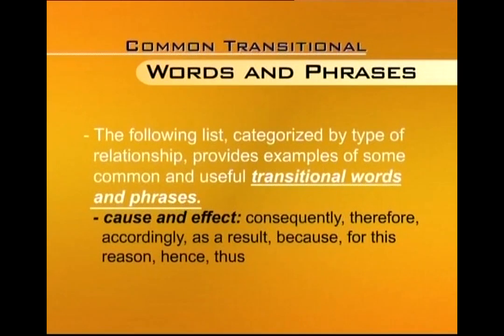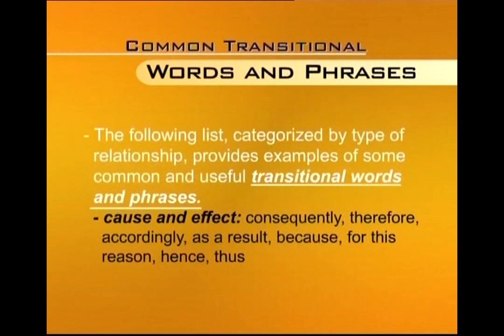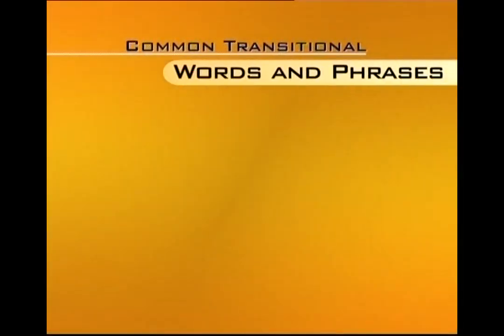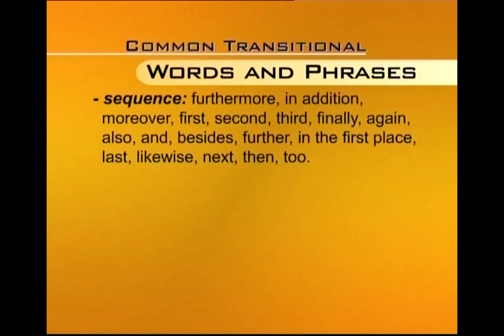The following list is characterized by type of relationship and provides examples of common and useful transitional words and phrases. Cause and effect relationships can be shown by words like: consequently, therefore, accordingly, as a result, because, for this reason, hence, thus. A sequence can be shown by: furthermore, in addition, moreover, first, second, third, finally, again, also, and, besides, further, in the first place, last, likewise, next, then.